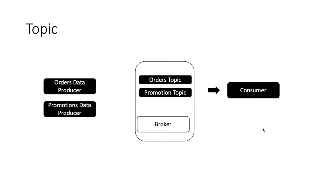Let us take an analogy. Suppose there are different teams storing data in a database and you want to consume some data. You will go to the consumers table for consumer data, the products table for products data, and the promotions table for promotions data. In a similar way, if a consumer wants to consume orders data in Kafka, it has to go to the orders topic. For consuming promotions data, it has to go to the promotions topic. So a topic is a logical name given to one kind of data. By definition, a topic is a stream of data.